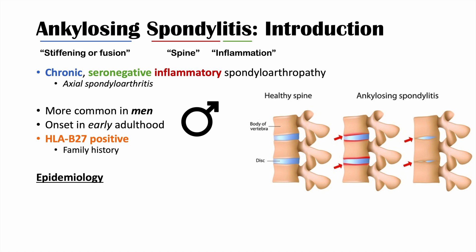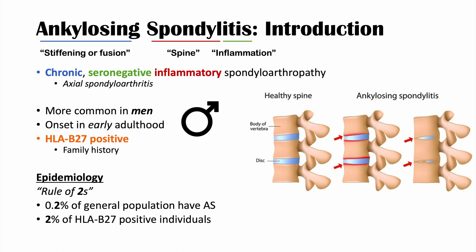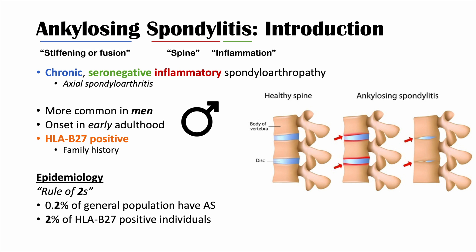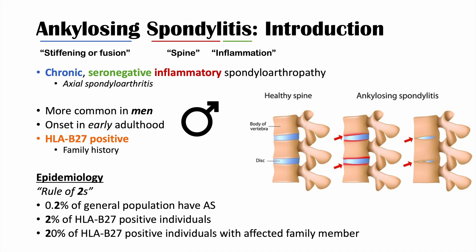The epidemiology of ankylosing spondylitis can be remembered by the rule of twos. 0.2% of the general population has ankylosing spondylitis. 2% of HLA-B27 positive individuals will have ankylosing spondylitis — about 8 to 10% of the general population is HLA-B27 positive, but only 2% of those will develop the condition. And 20% of HLA-B27 positive individuals with an affected family member will have ankylosing spondylitis, so having a family history increases risk.